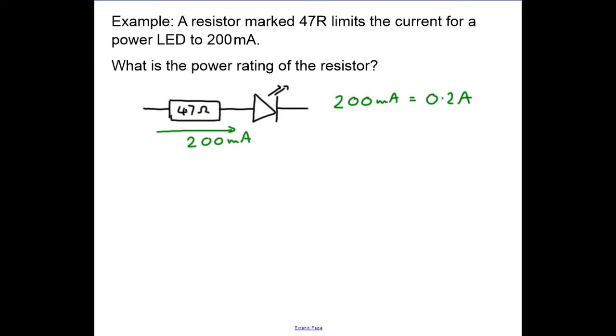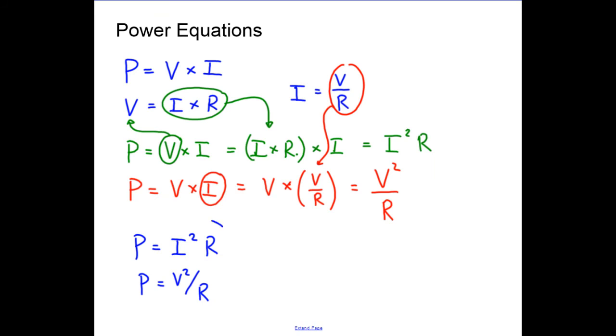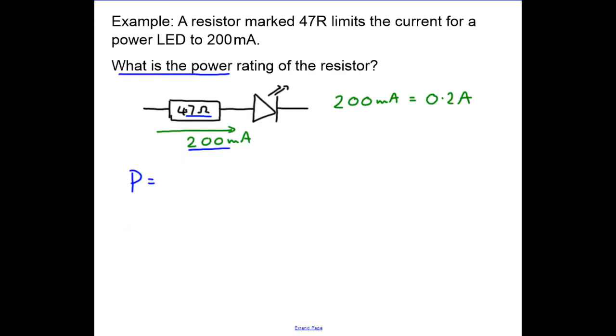What is the power rating of the resistor? How much power does the resistor have to dissipate? We have the current and resistance, so we'll use power equals I squared R. That equals 0.2 squared times 47. Let's pull up the calculator.